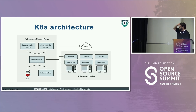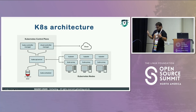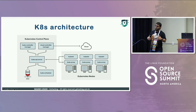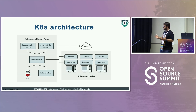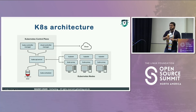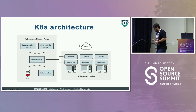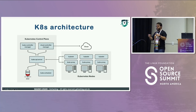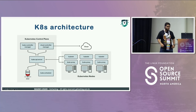On the top right of the control plane, you have the cloud controller manager. People reference Kubernetes as the operating system of the cloud. It has the ability to communicate with different cloud providers — AWS, Google, Azure, and others. It interacts with those cloud provider APIs to provide things Kubernetes can't provide on its own, such as EBS volumes or load balancers.